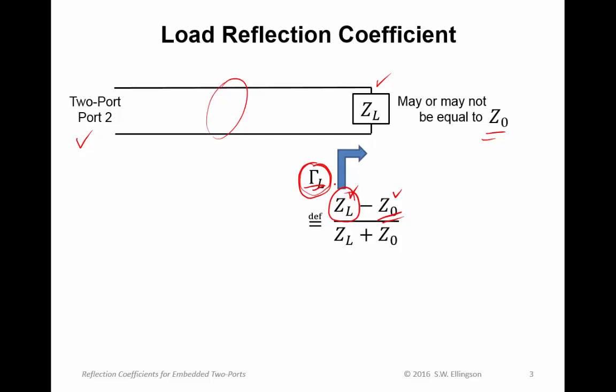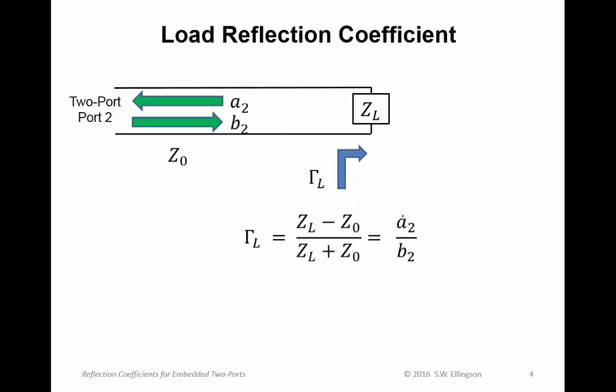The number one point of confusion people often have at this point is forgetting this idea. For example, if you run into a problem where the characteristic impedance of the transmission line is something other than the reference impedance and you decide that gamma L should use Z sub C — that's wrong. In this concept, we're defining the reflection coefficient with respect to the reference impedance Z naught. Having done this, we can also relate gamma L to the power waves on the transmission line. Since this is the output of the two-port, we have inbound power wave A2 and outbound power wave B2, and the load reflection coefficient equals the ratio A2 over B2.